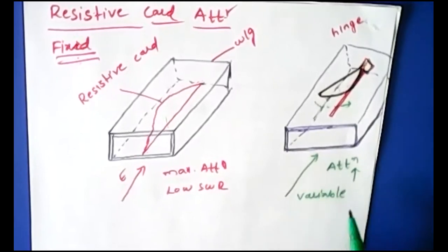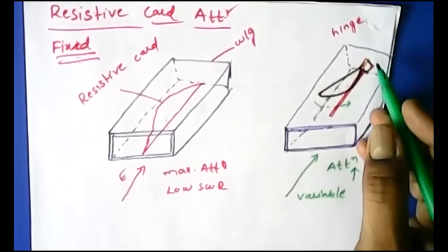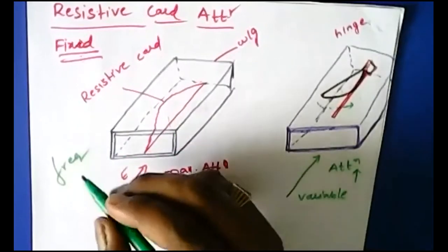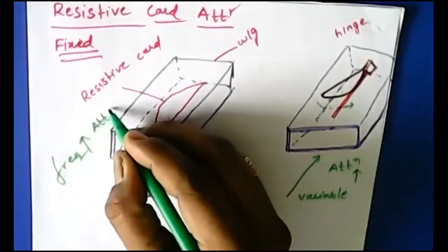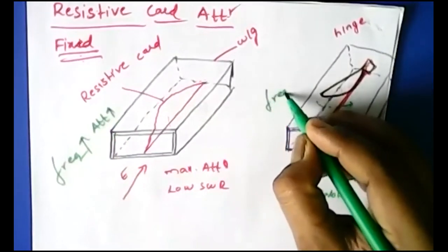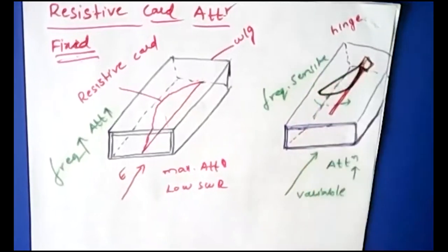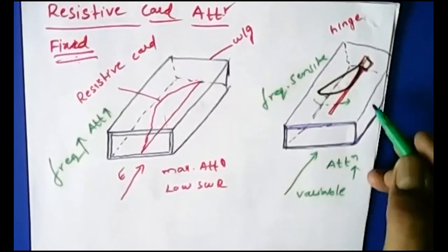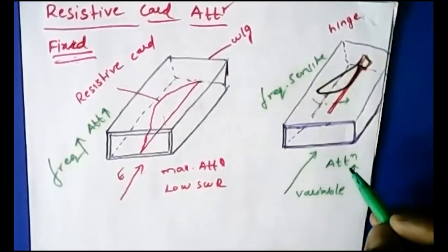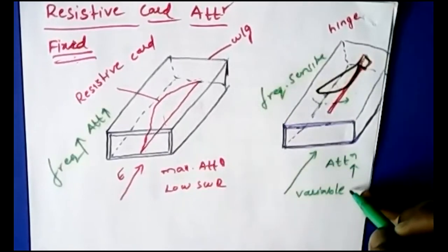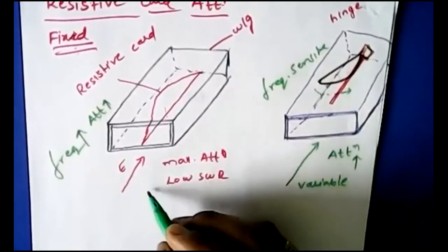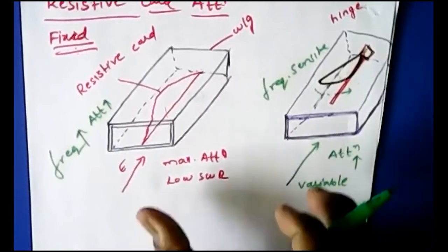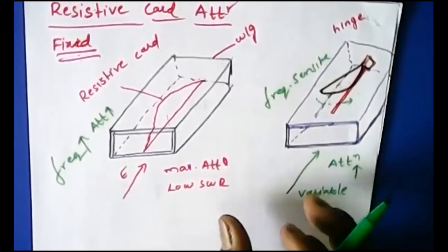The variable attenuator is frequency sensitive — as frequency increases, attenuation increases. This fixed and variable resistive card approach is not that accurate; there may be some variation in accuracy in these two cases.